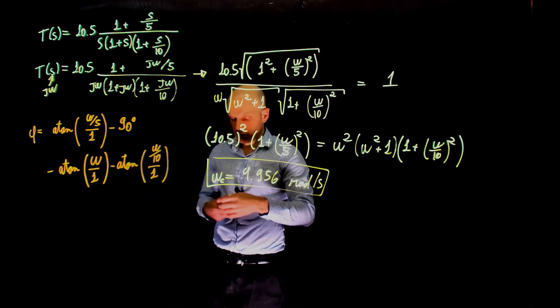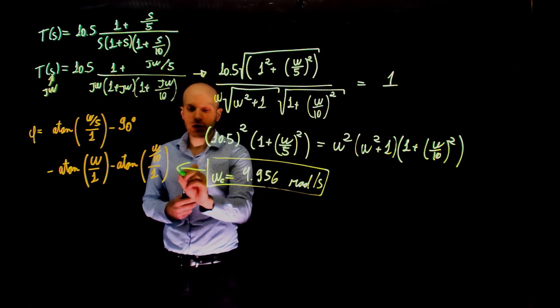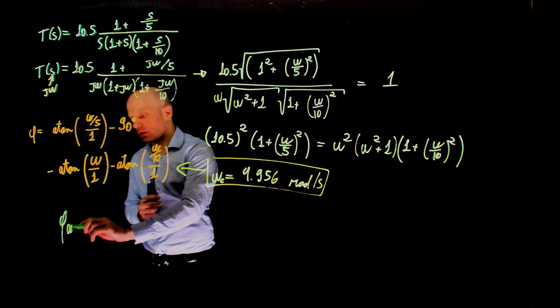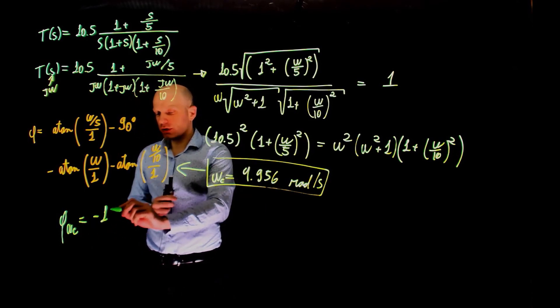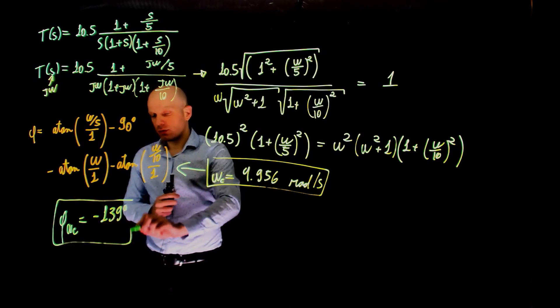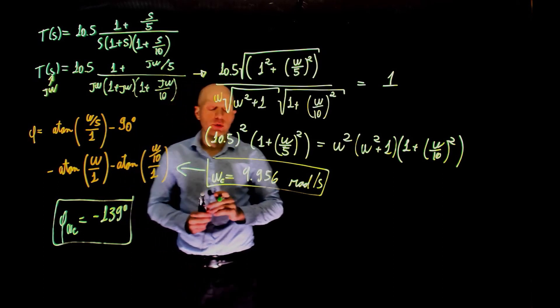We can now use the phase at the crossover frequency we calculated here. Just replace it in there and the phase of the transfer function at the crossover frequency will be negative 139 degrees. So basically we are solving this equation when omega equals around 5 radians per second.